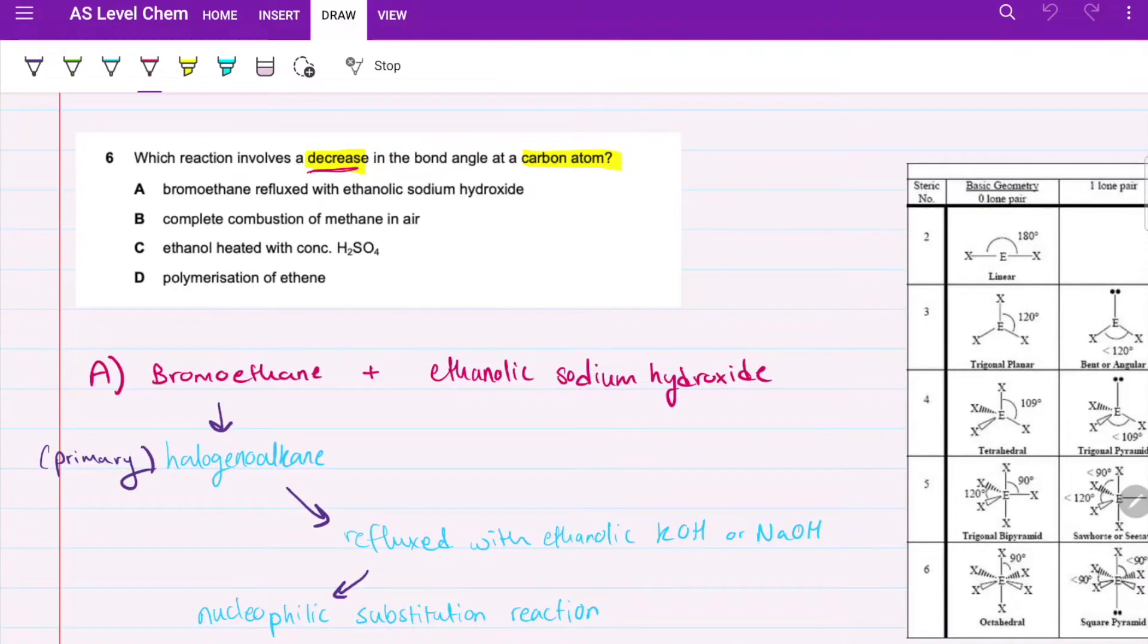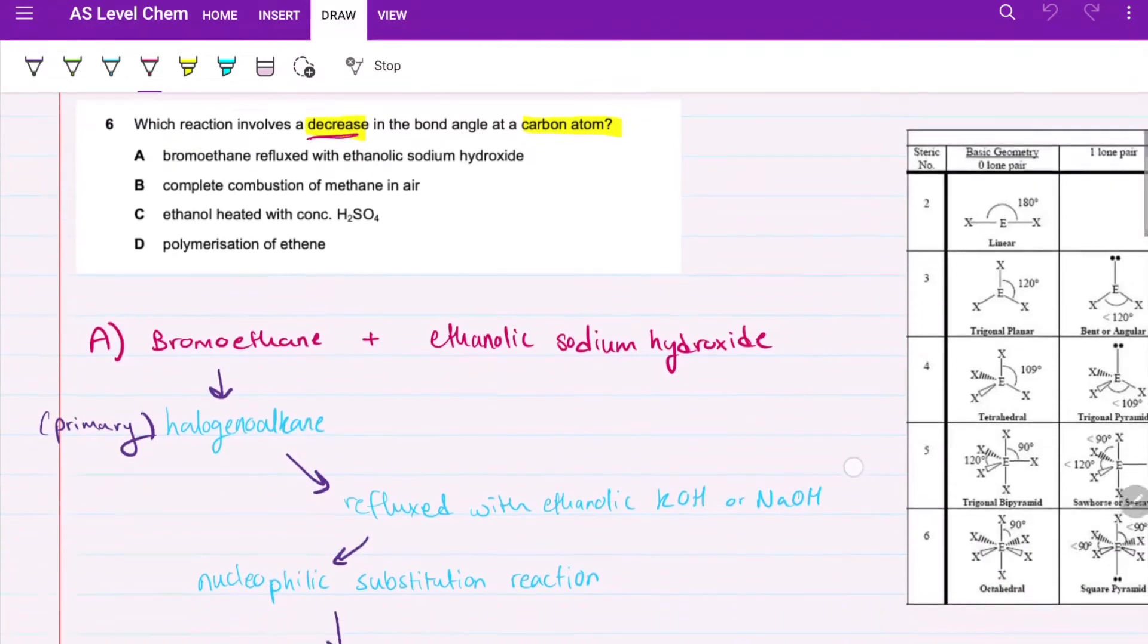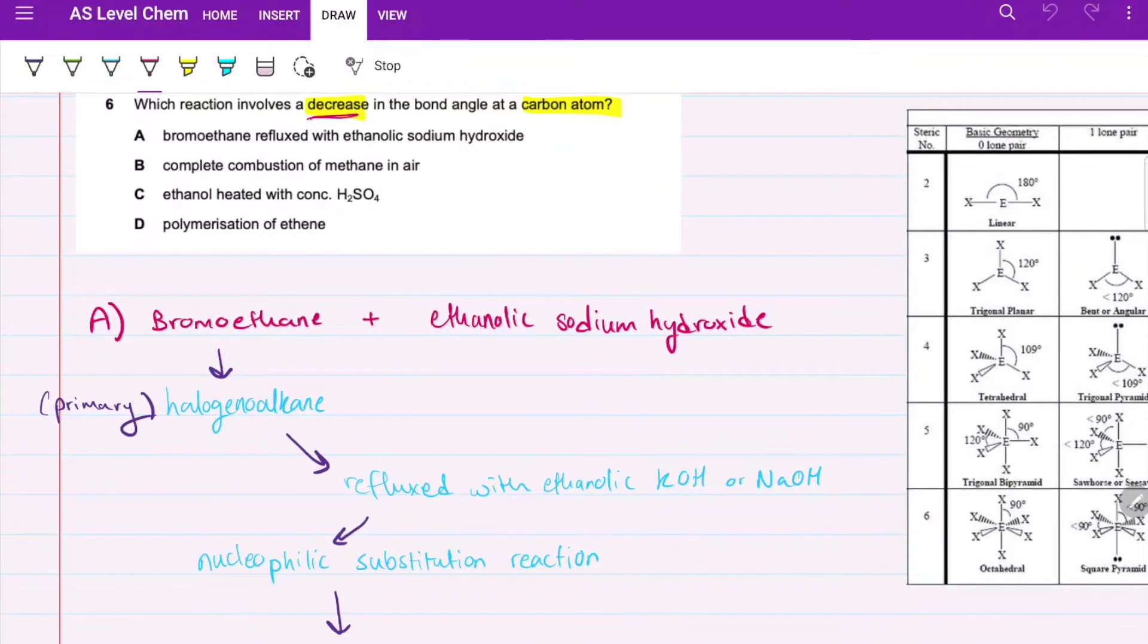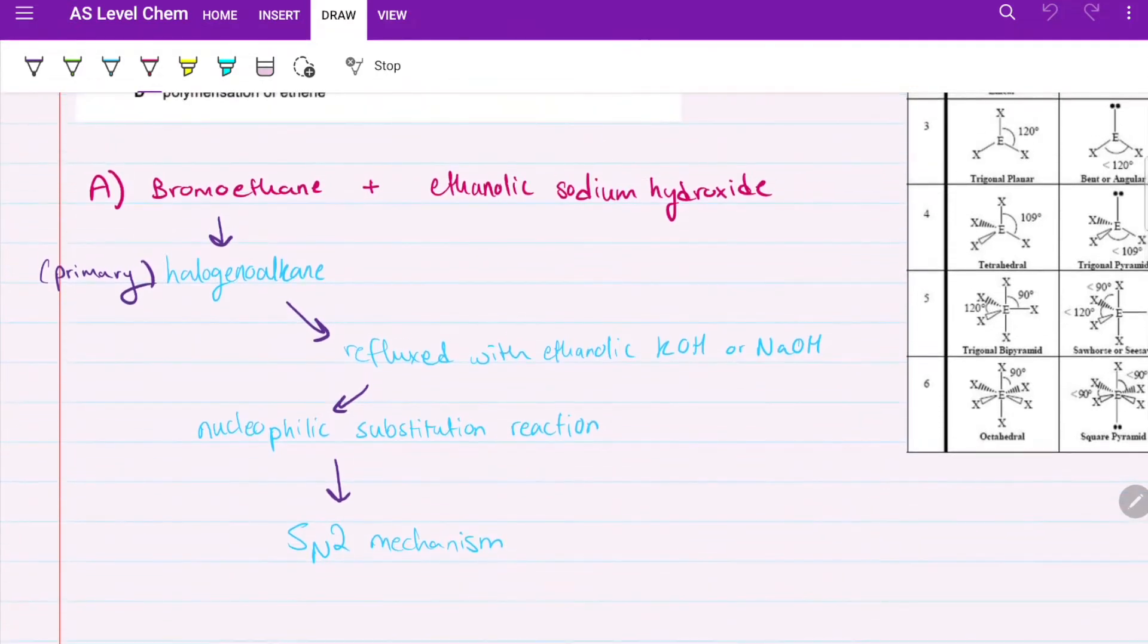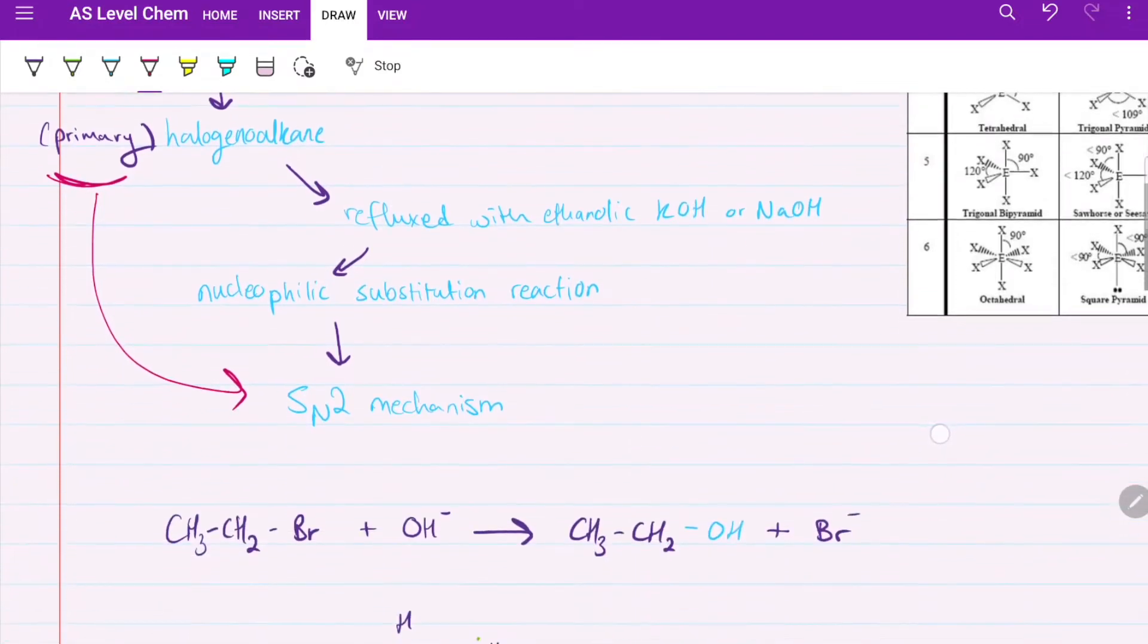For bromoethane refluxed with ethanolic sodium hydroxide, this is what's needed for a nucleophilic substitution reaction. Bromoethane is a halogenoalkane, an alkane bonded to a halogen. This one is a primary halogenoalkane. When we have a halogenoalkane and hydroxide, specifically potassium hydroxide or sodium hydroxide, and it's refluxed, we have a nucleophilic substitution reaction. Because it is a primary halogenoalkane, we'll end up with an SN2 mechanism.